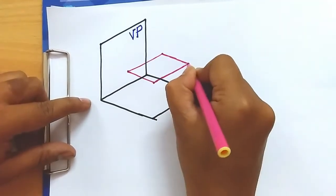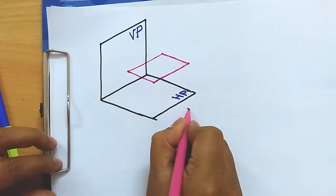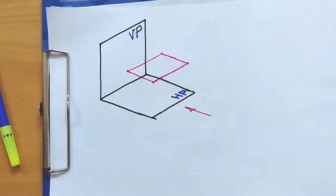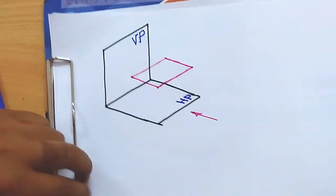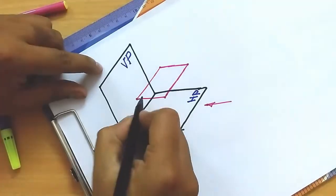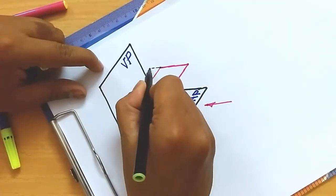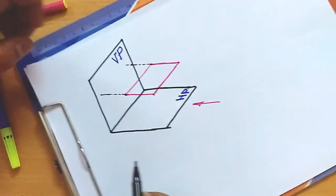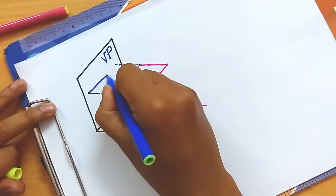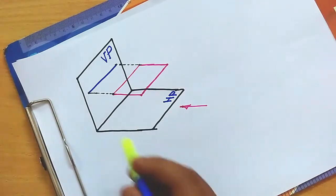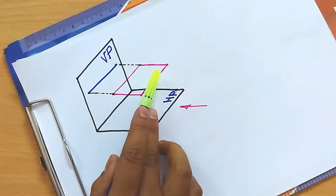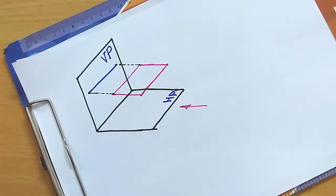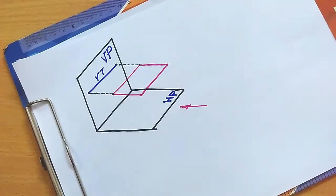This is the plane which we are concerned about. Now we are going to look at this plane from the front. If you extend the plane along its plane, the place where it meets the vertical plane is its trace. On extending this plane, we found that it meets the vertical plane along this line. So this is the vertical trace, VT.